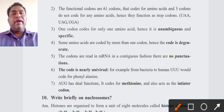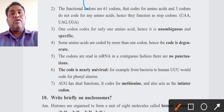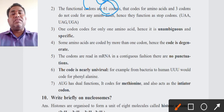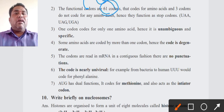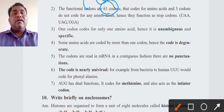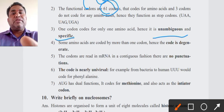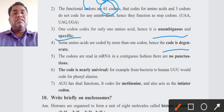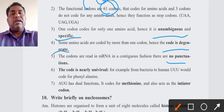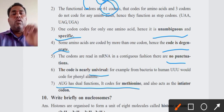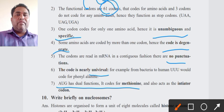To summarize the key points of this question: the genetic code is triplet; total codons are 64; from 64, 61 are sense or essential codons, and three are nonsense or stop codons; third, the code is unambiguous and specific; fourth, the code is degenerate; fifth, it has no punctuations and is read contiguously; sixth, it is nearly universal; and seventh, AUG has a dual role. These are the key points you must keep in mind.